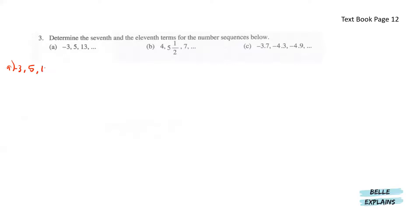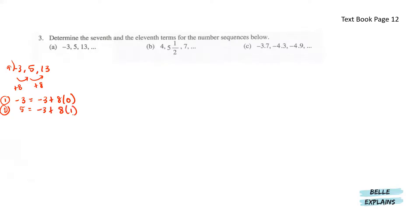Negative 3, 5 and 13. So in between here, we can see the pattern is plus 8 and here is also plus 8. So for our first term, negative 3 equals to negative 3 plus 8 times 0, because this is the first term so n minus 1 gives us 0. Next, 5 equals to negative 3 plus 8 times 1. Then 13 equals to negative 3 plus 8 times 2. So here we have the pattern where Tn equals to negative 3 plus 8(n minus 1).